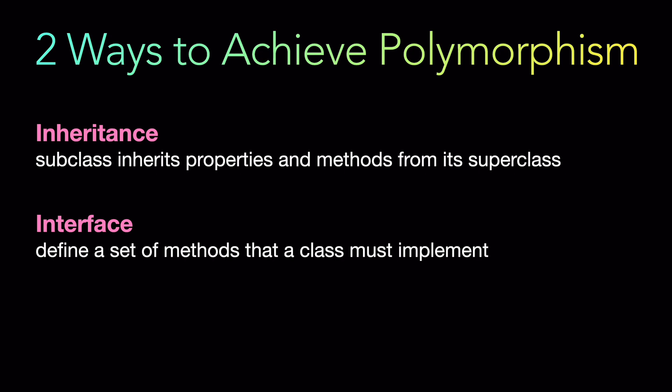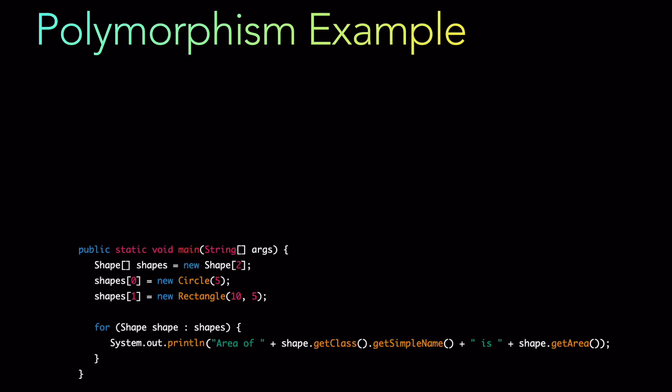Now let's take a polymorphism example and work backwards. We have this main function which defines an array of shapes — two shape objects in an array. Index zero holds a circle object and index one holds a rectangle object. The shapes array is of type shape, but we are able to put circle and rectangle inside it. Then we iterate over the shape array and print the area of each shape.